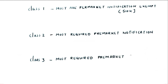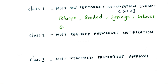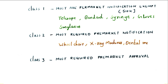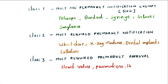Now we'll see a few examples for Class 1, Class 2, and Class 3 medical devices. Class 1 examples include the stethoscope, band-aid, syringe, glasses, and sunglasses. For Class 2 devices, examples are the wheelchair, X-ray machines, dental implants, and catheters. The most critical devices — implantable Class 3 devices — include heart valves, pacemakers, and hip and bone joints.